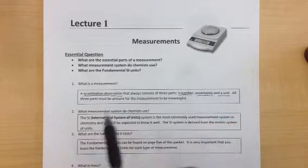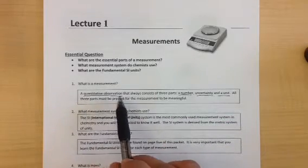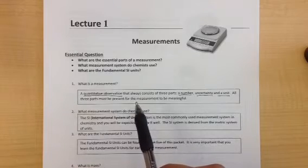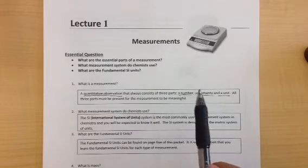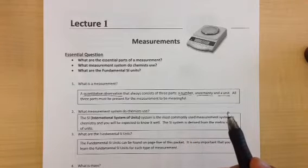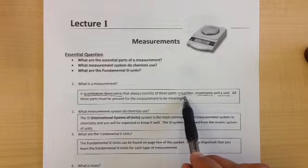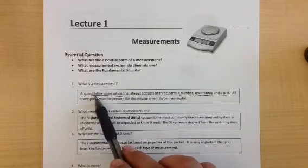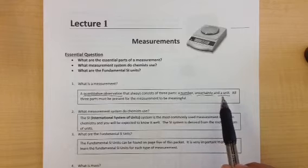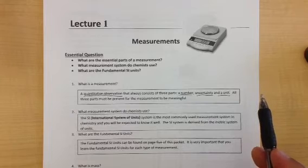What exactly is a measurement? By definition, a measurement is a quantitative observation. The word quantitative means numerical number. There are three major parts to any measurement that you have to include in order for the measurement to be correctly written. It must include a number, the quantitative observation. It must include an uncertainty, which is the error in the measurement, and a unit so we understand what we are actually measuring.